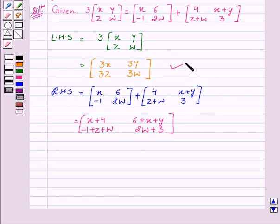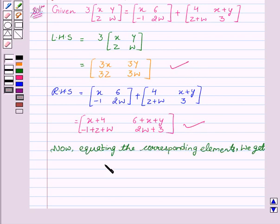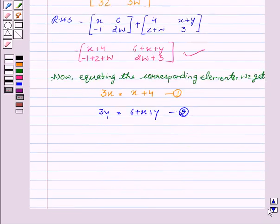Now we have both LHS and RHS. We will equate the corresponding elements. 3x equal to x plus 4, this is equation 1. Then 3y equal to 6 plus x plus y, equation 2. Then 3z equal to -1 plus z plus w, equation 3. And 3w equal to 2w plus 3, equation 4.